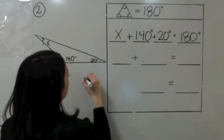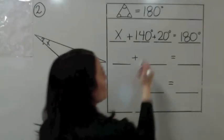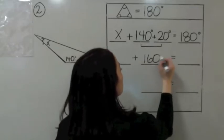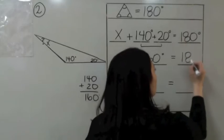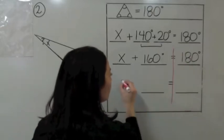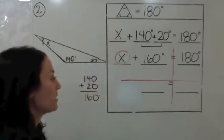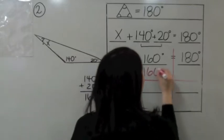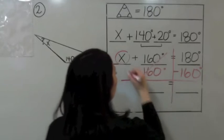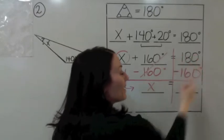We're taking 140 plus 20. What is 140 plus 20? It's 160 degrees. Make this symbol to show we're combining like terms: 140 plus 20 is 160 degrees. Rewrite X and bring down 180 degrees. Now make a T, make some space, and circle X. What is the opposite of positive 160? It's negative 160 degrees. Positive 160 and negative 160 make zero. So the missing angle is 180 minus 160 degrees.